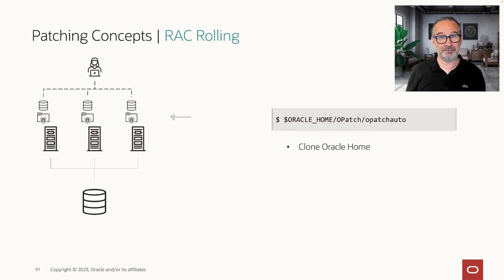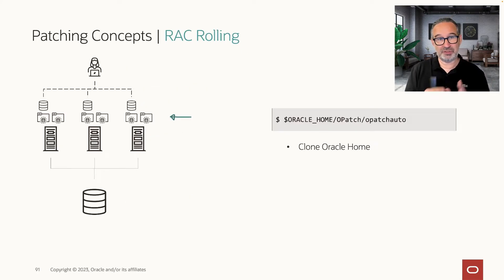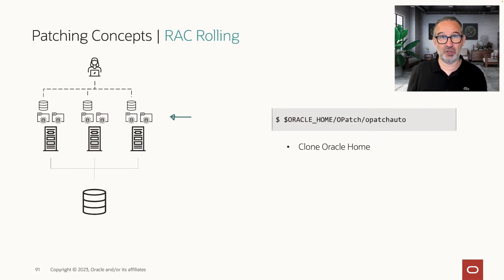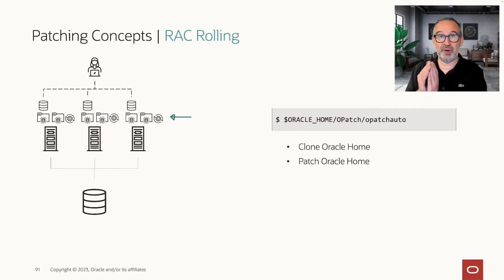So what do we do? Here we can use opatch auto with a sort of orchestrated opatch way. I clone my Oracle Home, I provide a new Oracle Home, whatever I prefer. And then I run opatch auto, so it patches now node by node — the instances get patched.